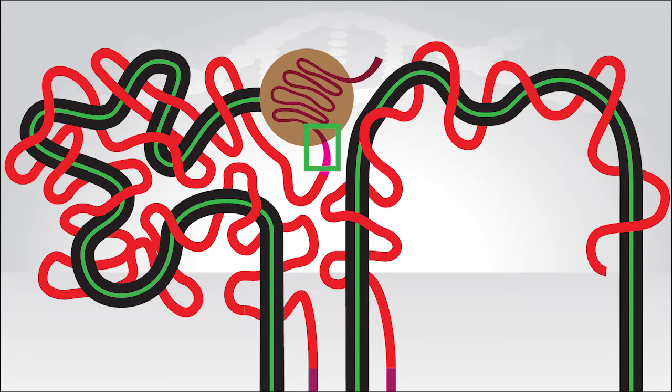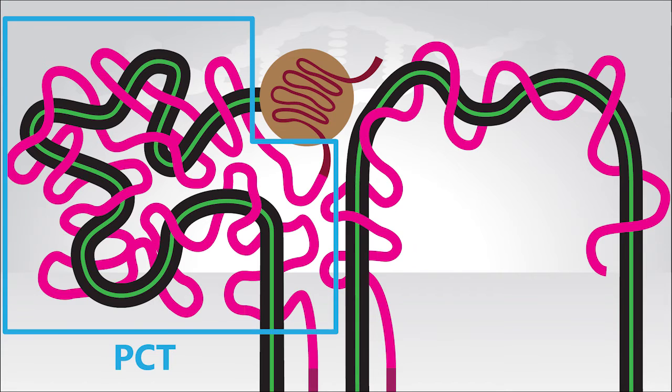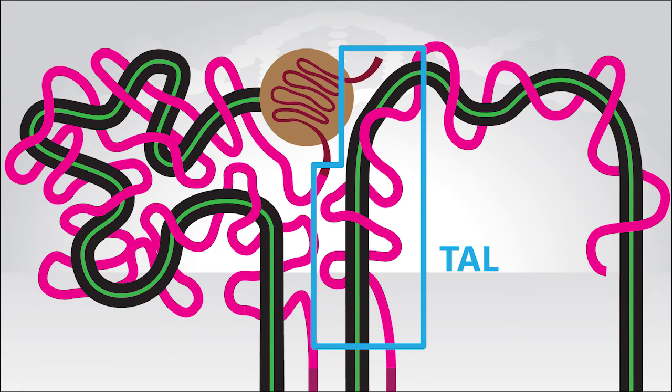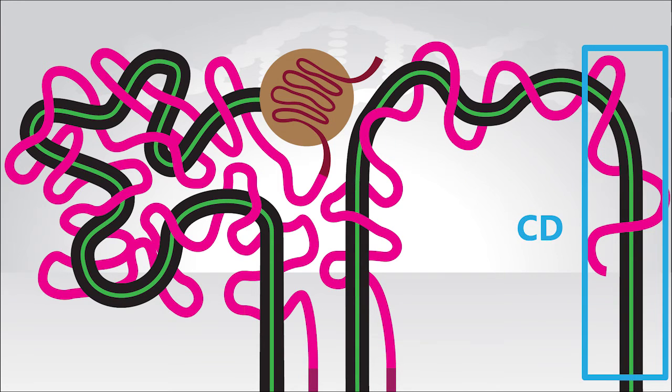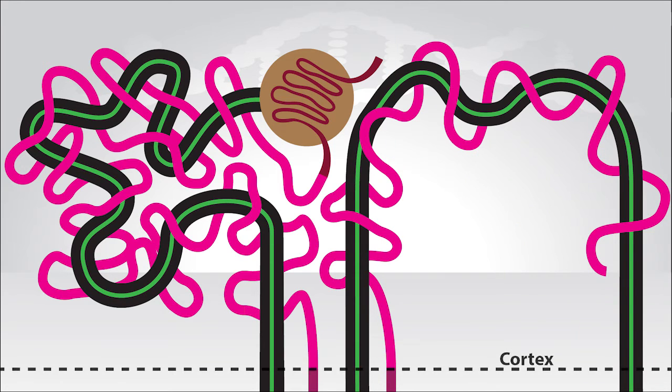Now as the efferent arterial exits the glomerulus, it promptly merges into the peritubular capillaries, which make up a dense, convoluted network of capillaries that surround the proximal convoluted tubule, cortical thick ascending limb, distal convoluted tubule, and cortical collecting duct. Notice how the peritubular capillaries are restricted to the cortex, and because of their location and proximity to the nephron segments within the cortex, they are responsible for returning the water and solutes to the vasculature that are reabsorbed along these nephron segments.